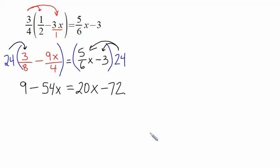Now, we want x's on one side and numbers on the other side. So at the next step, I want to get the negative 54x off the left-hand side. Personally, I like the number in front of x to be positive. So we will add that 54x to both sides. On the left-hand side, we have 9 equals 74x minus 72.